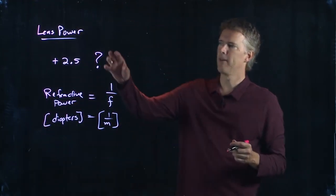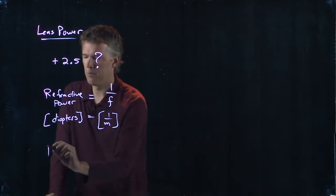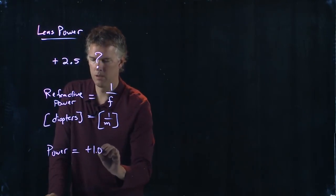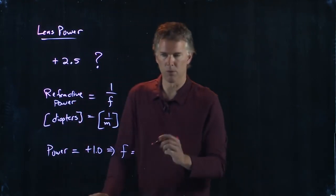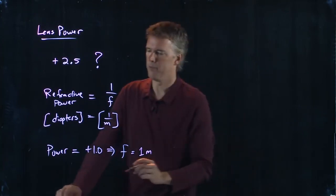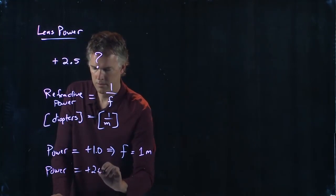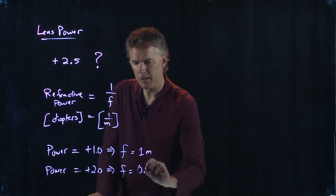So if you have a plus 1 lens, if your power equals plus 1, then that means the focal length is 1 over that—it's 1 meter. But if you have a power of 2, focal length is 1 over that, which is half a meter.